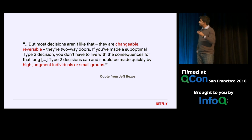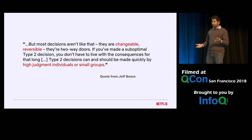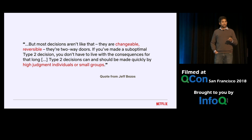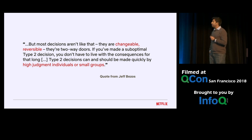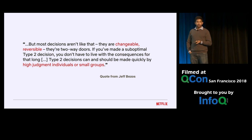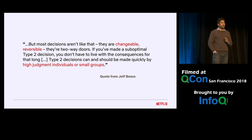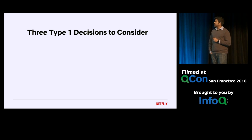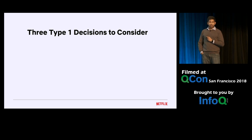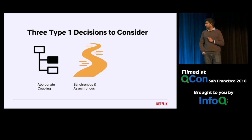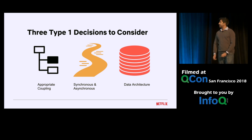He goes on to say: but most decisions aren't like that. They are changeable, reversible — two-way doors. If you've made a suboptimal type two decision, you don't have to live with the consequences for that long. Type two decisions can and should be made by high-judgment individuals or small groups. This is great wisdom we can apply to architectural design. At Netflix, we believe there are three type one conditions to consider: appropriate coupling, the choice between asynchronous and synchronous, and data architecture.